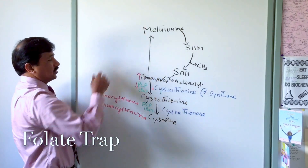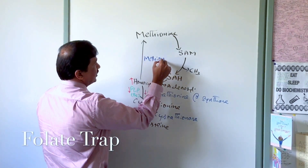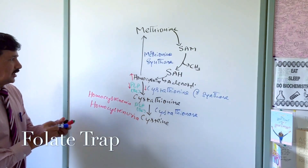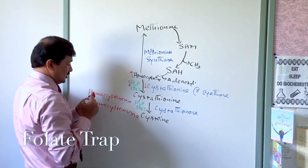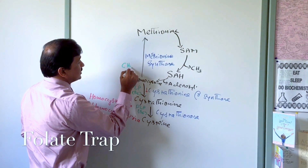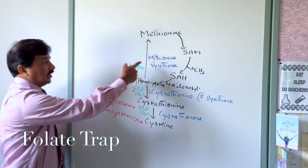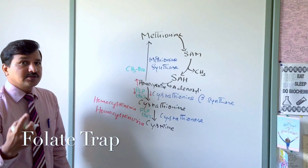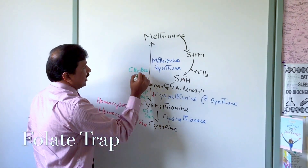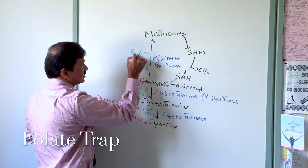Now let's see how homocysteine is converted back to methionine. This is done by an enzyme called methionine synthase. Methionine synthase needs a coenzyme — methylcobalamin (CH3-B12). We have two forms of cobalamin: methylcobalamin, needed by methionine synthase, and deoxyadenosylcobalamin, needed by methylmalonyl-CoA mutase. Methylcobalamin enters the reaction and comes out as just cobalamin (B12).